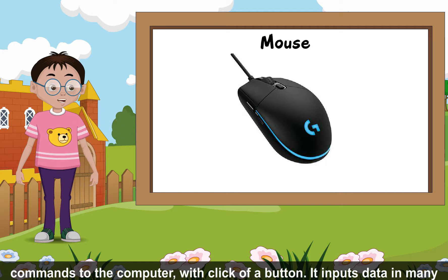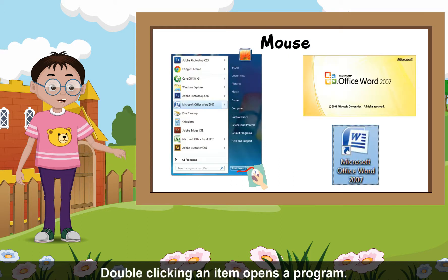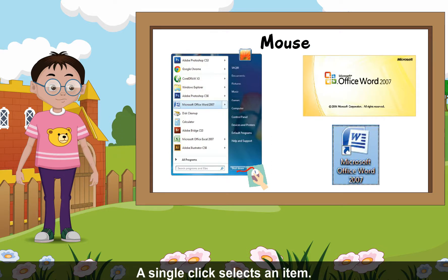With a click of a button, it inputs data in many ways. Double clicking an item opens a program. A single click selects an item.